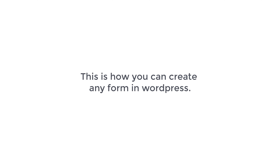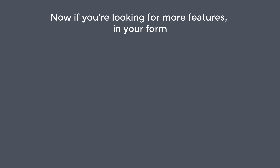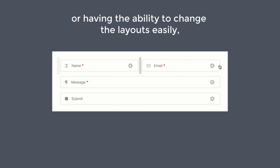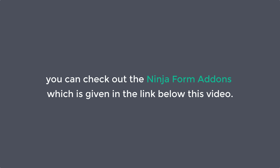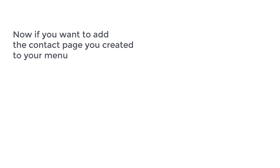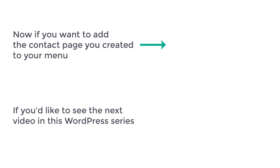This is how you can create any form in WordPress. Now if you're looking for more features in your form — like having the option to upload files directly in the form, or having the ability to change the layouts easily — you can check out the Ninja Forms add-ons which are given in the link below this video. So you can click that link to see the additional features you can add to your form. This is how you can create a contact form or any other form in WordPress. Now if you want to add the contact page you created to your menu, you can see how to do that in this video. If you'd like to see the next video in this WordPress series, you can watch this video. That's it guys — I'll see you in the next video, take care, bye bye!